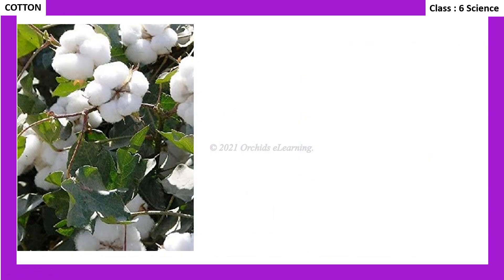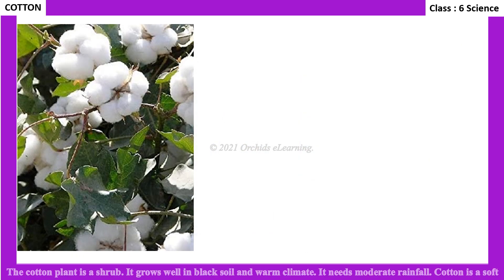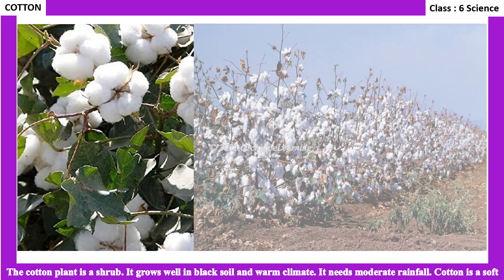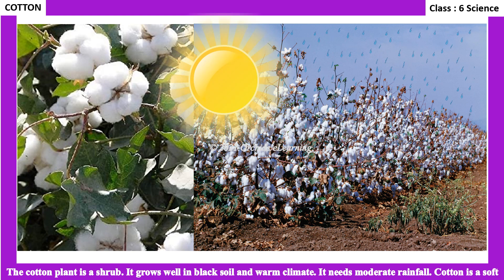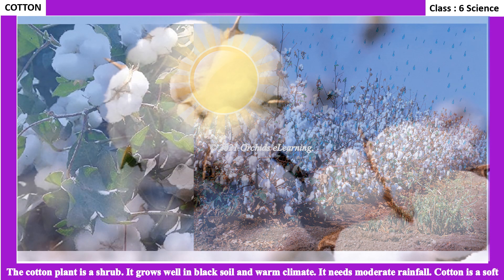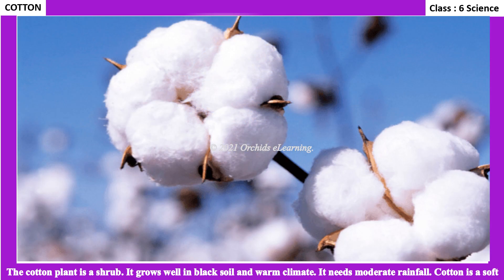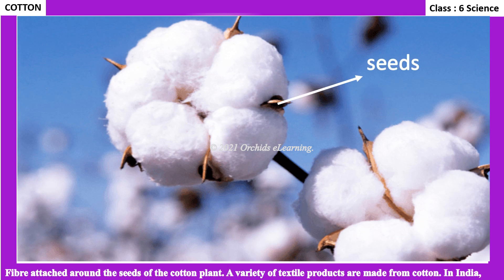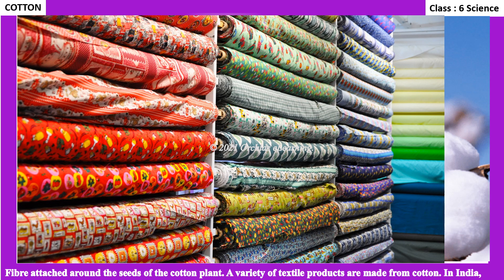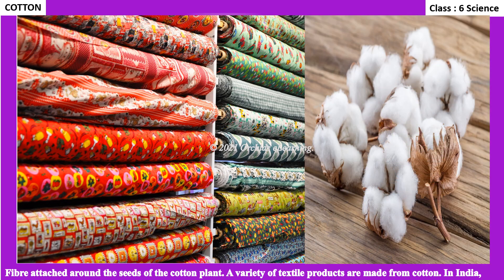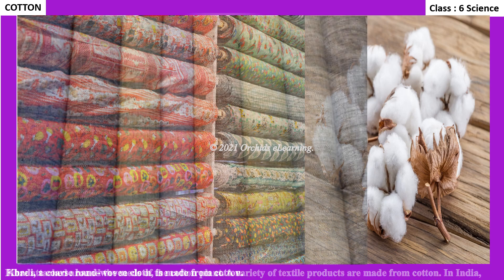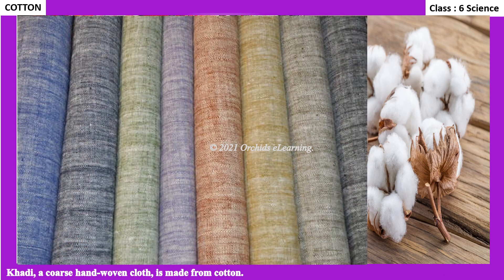The cotton plant is a shrub that grows well in black soil and warm climates. It needs moderate rainfall. Cotton is a soft fiber attached around the seeds of the cotton plant. A variety of textile products are made from cotton. In India, khadi — a coarse hand-woven cloth — is made from cotton.